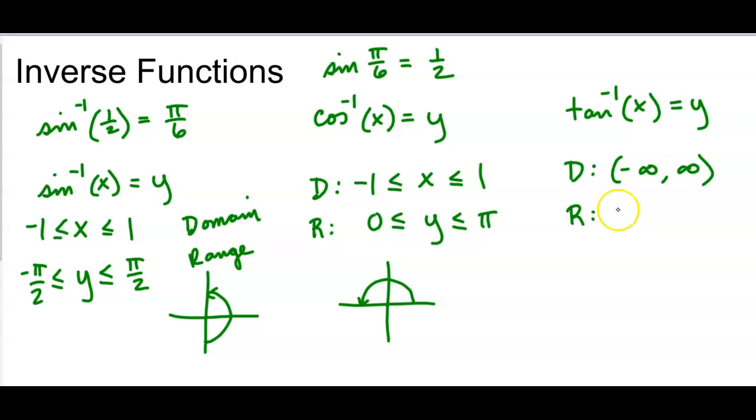The range is going to go from negative pi over 2. But it can't equal that. That's where the asymptote is. To pi over 2.